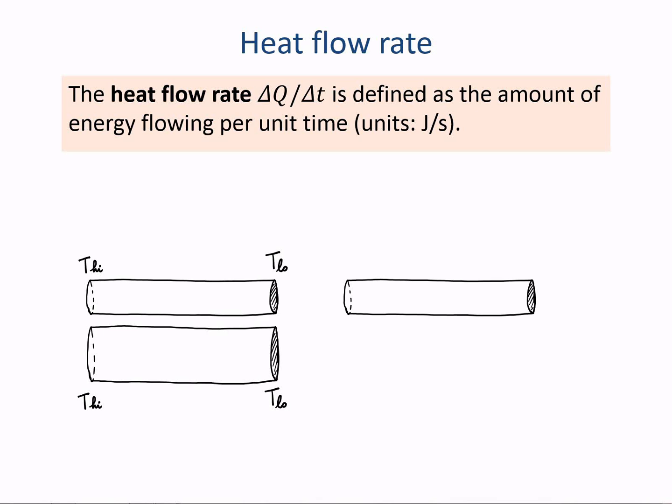In a separate experiment, you could take a metal rod between the same high temperature and low temperature and compare it with a longer rod kept between the same temperatures. You will observe that the amount of heat flowing in 10 seconds in the shorter rod is greater than that flowing in the longer rod in the same amount of time.